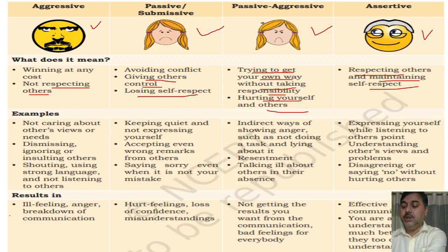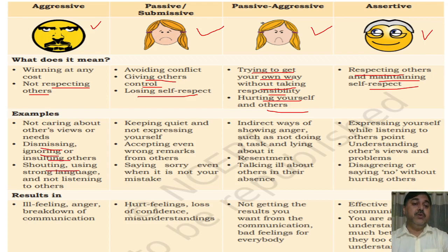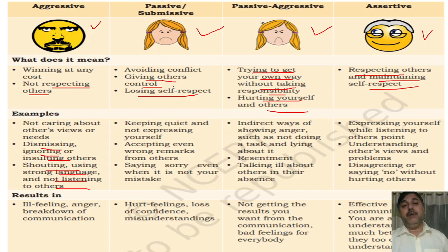Examples for aggressiveness: not caring about other views — aggressive means you will not care about any other views, what the other person is thinking or what the other person's requirements are. This includes dismissing, ignoring, and insulting other people, shouting, using strong language, and not listening to others.